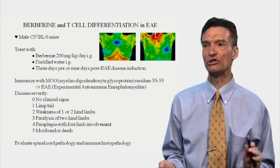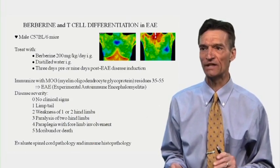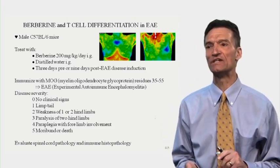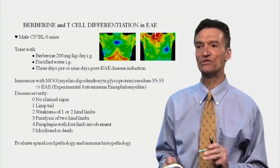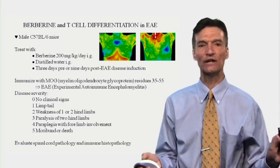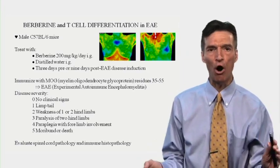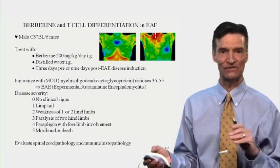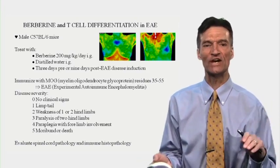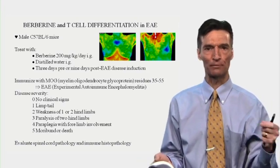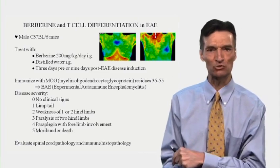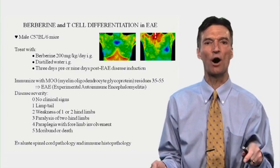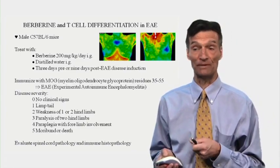Let's switch gears and talk about immune dysregulation. We're going to look at berberine and T cell differentiation in experimental autoimmune encephalomyelitis. We're going to get genetically normal mice. From our prior discussion, I presented a study where if you take troponin — a cardiac protein — and immunize mice with it, they will develop a Th1/Th17 immune response against the heart and develop a cardiomyopathy.